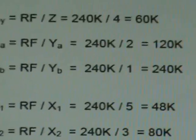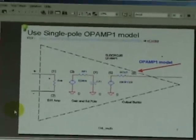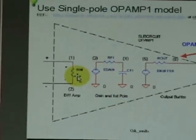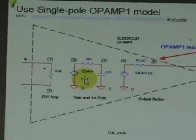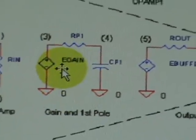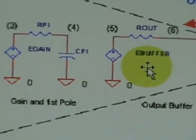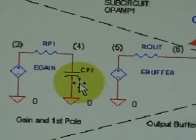So we will borrow one of the single-pole operational amplifier models available from E Center. It has an input impedance of RIN between non-inverting and inverting 1, 2. And internally, it has two voltage-controlled voltage sources. The first one on the left has a gain of E gain, and the one on the right has a gain of E buffer value. And it has an output resistance of R out. And the RP1 and CP1 determine the break-off frequency of the model.